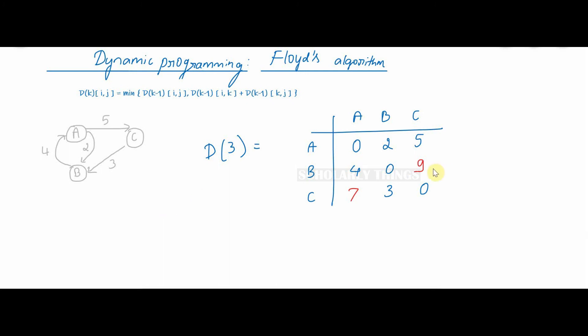To summarize, when we took k is equal to 1 we found this minimum path. Then when we took k is equal to 2 we found this minimum path. k is equal to 3 there was no change. And finally d3 looks like this. You can write down the matrices d1, d2, d3 separately for a better understanding.